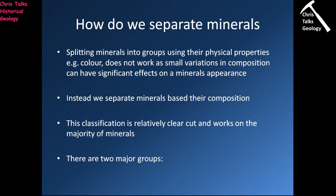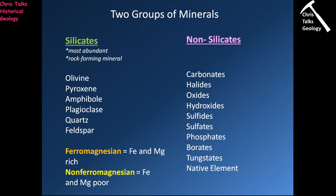The most important question is how do we actually separate and classify minerals. Trying to split minerals apart based on physical properties like colour doesn't tend to work, because very small variations in composition can have a very significant effect on how a mineral actually appears. Instead, we classify minerals based on their chemical composition, which has allowed us to split minerals into two broad groups: the silicates and the non-silicates.